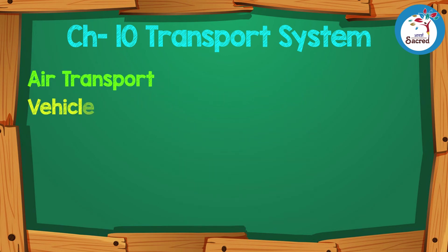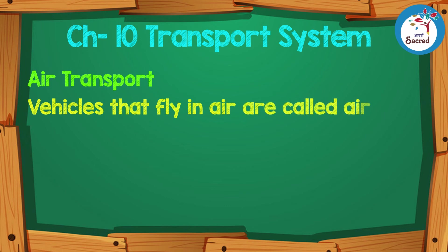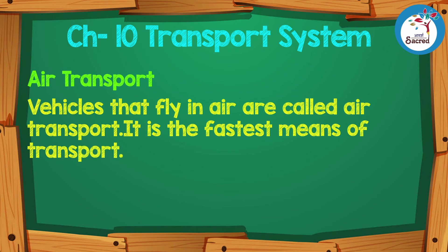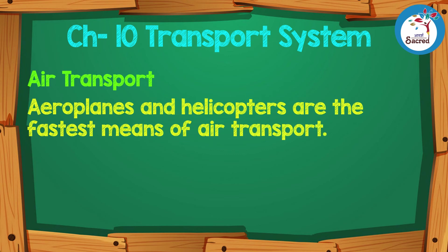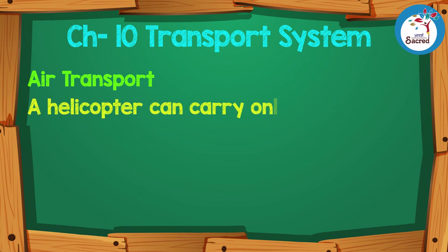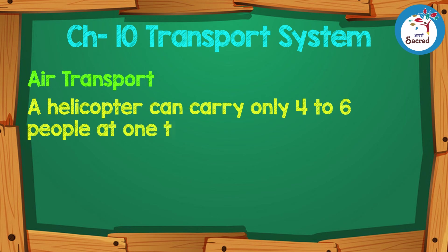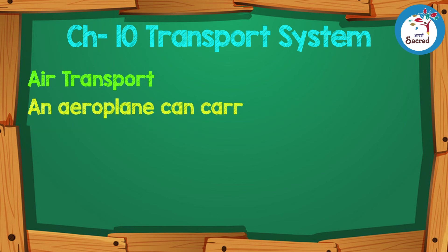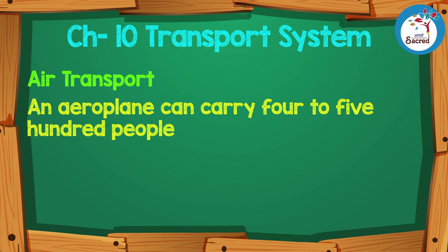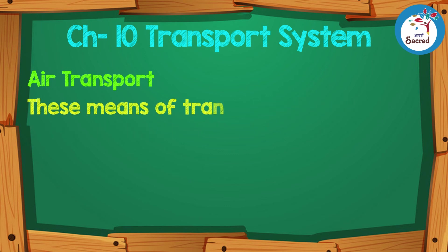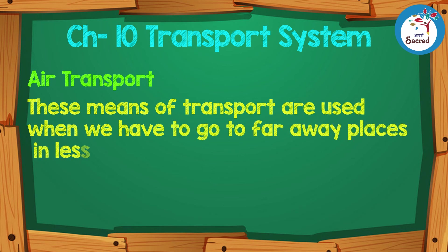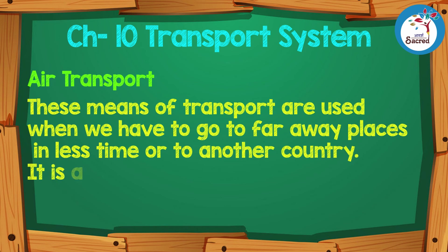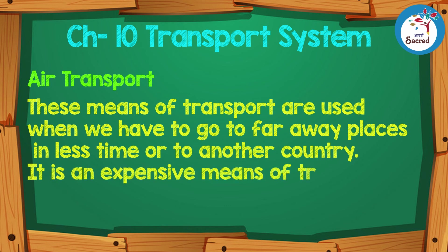Air transport: Vehicles that fly in the air are called air transport. It is the fastest means of transport. Aeroplanes and helicopters are the fastest means of air transport. A helicopter can carry only 4–6 people at one time, while an aeroplane can carry 4–500 people at a time. These means of transport are used when we have to go to faraway places in less time or to another country. It is an expensive means of transport.